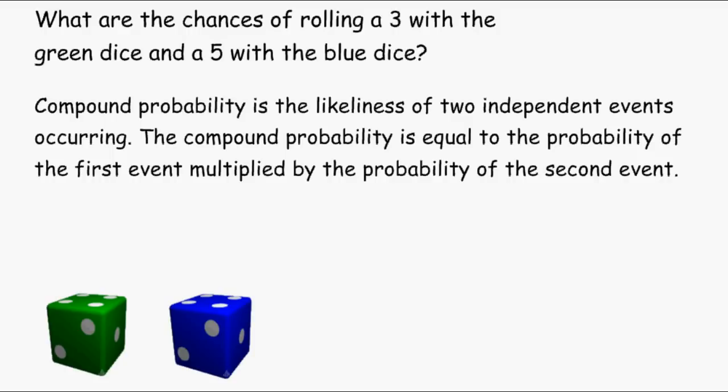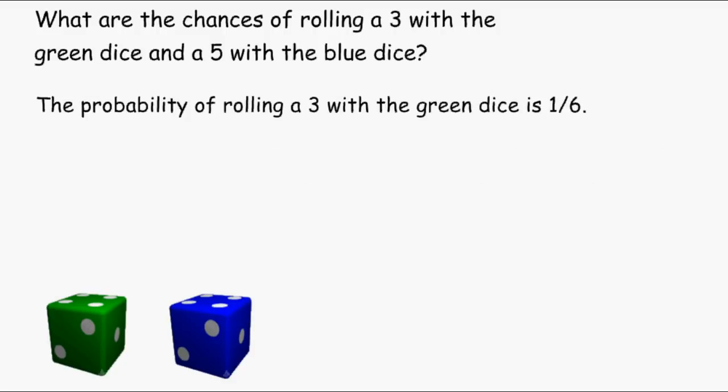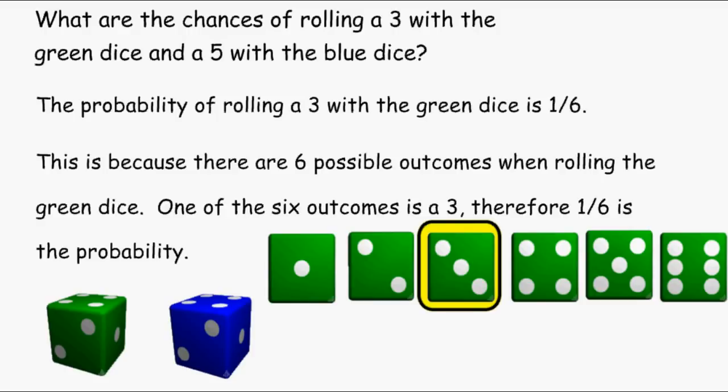So basically we have to figure out what are the chances of rolling a 3 with the green dice and multiply that by the probability of rolling a 5 with the blue dice. The probability of rolling a 3 with the green dice is 1 sixth, because the green dice has six possible outcomes and the number 3 represents one of those possible six outcomes.